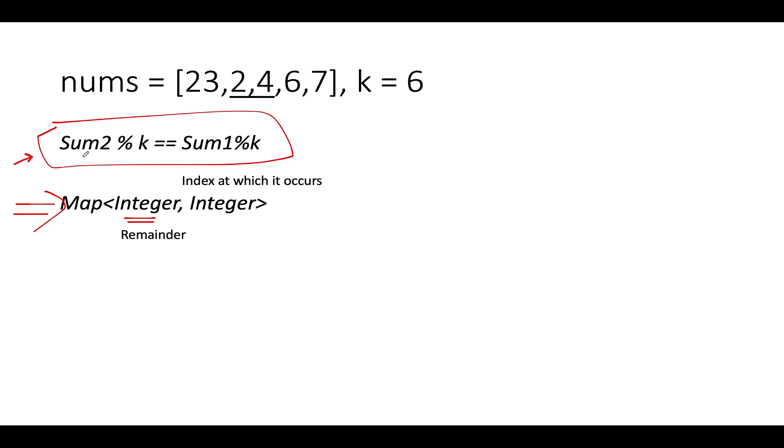So let's start the iteration and what we are interested in finding out is whether we see this condition or not. If we see this condition then we say true. If we don't see this condition ever while iterating over the entire array then we say false.